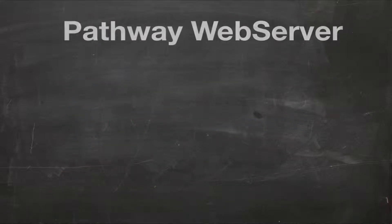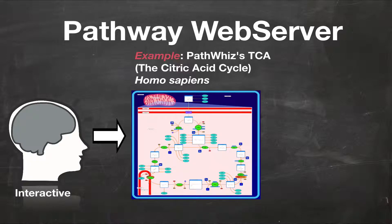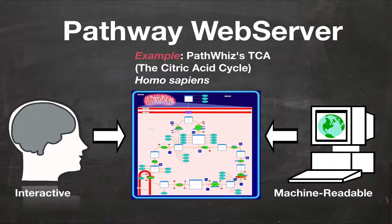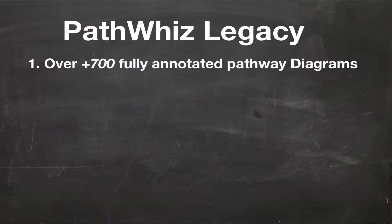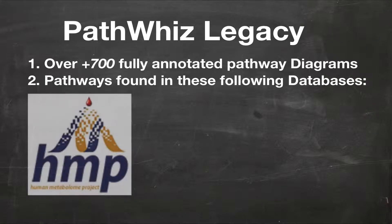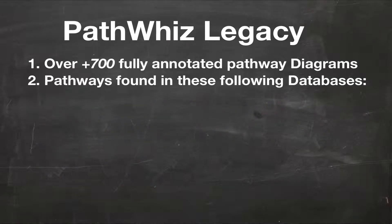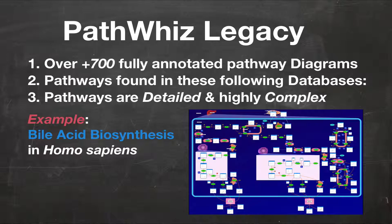PathWiz is a web server designed for the creation of colorful, visually pleasing, and biologically accurate pathway diagrams that are understandable to both humans — being interactive — and computers — being machine-readable. PathWiz has been used to generate over 700 pathway diagrams found in a number of popular databases, including HMDB, short for the Human Metabolome Database, DrugBank, and SMPDB, short for the Small Molecule Pathway Database. PathWiz allows pathways to be drawn with a high level of biological detail and complexity.